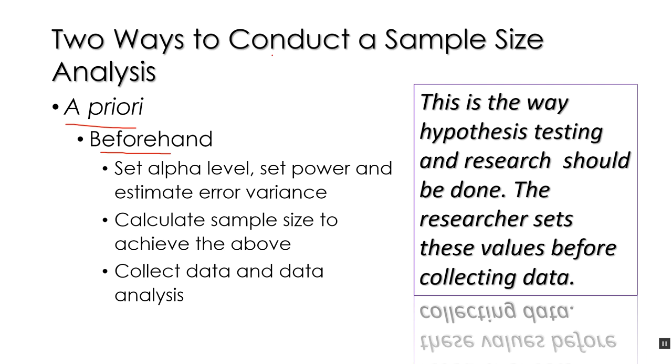One way is a priori, which in Latin and in the way that psychologists and statisticians use that Latin means beforehand. We can conduct a sample size analysis beforehand before we do our research study. So we set our alpha level, we set the power level, we estimate the error variance, we do all the things that we need to do beforehand, and then we calculate the sample size to achieve the alpha level and the power level that we want. Then we collect the data and analyze the data and make a decision. And as I say here in the text box, this is the way research should be done.